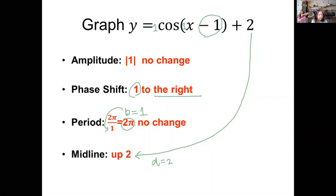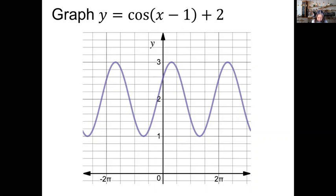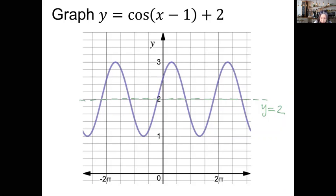After finding all key features, the graph looks like this. We can verify the midline passing through y = 2, because the d value at the end of the equation translates the whole graph up two units.